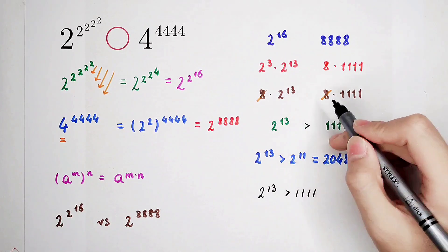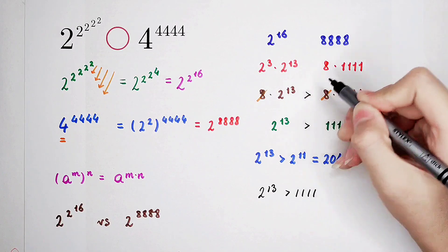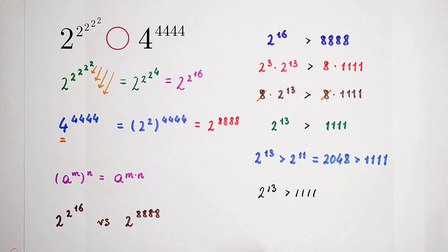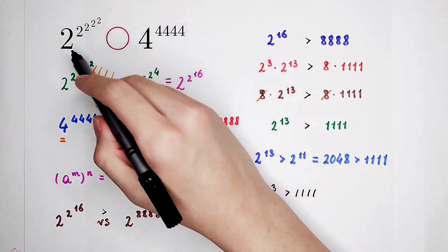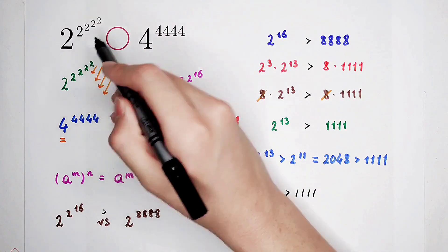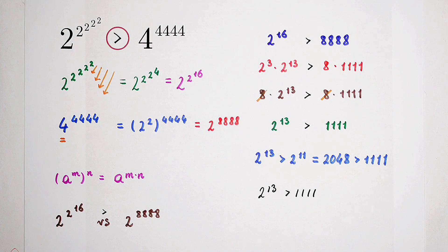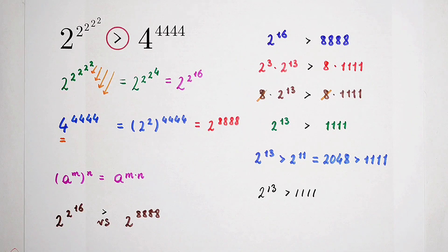So 2 to the power of 16 is larger than 8,888, meaning the left-hand side exponent is larger. Finally, 4 to the power of 4,444 is smaller than the tower of twos. Do you get it? Don't forget to give me a thumbs up and subscribe for more videos. Welcome to join us and become a member — click the link on the top. See you next time. Bye!